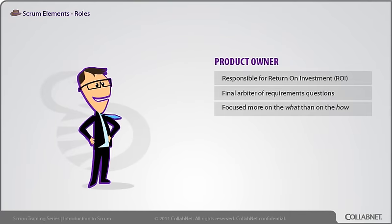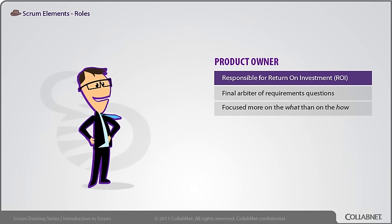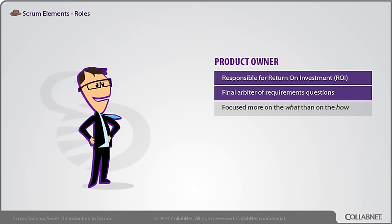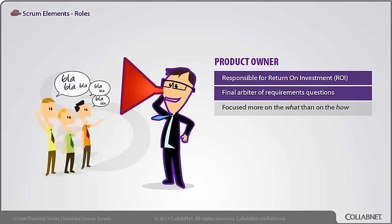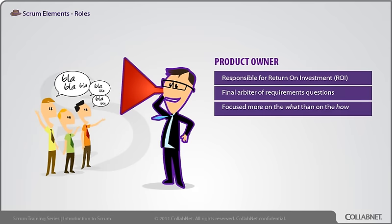The Product Owner is the single individual responsible for return on investment (ROI) of the product development effort. The Product Owner mostly exerts that influence through the prioritization of the product backlog and is the final arbiter of requirements questions. The Product Owner must have the vision behind the product development — a detailed roadmap may not make sense under high uncertainty, but a vision is important. If anyone else wants anything from the team, they need to work through the Product Owner. He's the one person making prioritization and business decisions for that team, focused more on the 'what' than the 'how.'